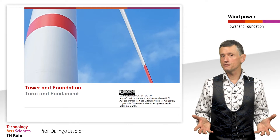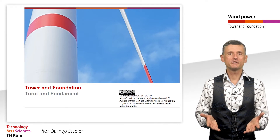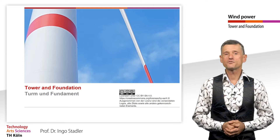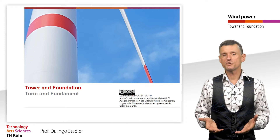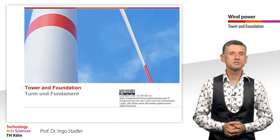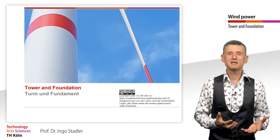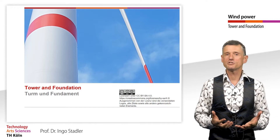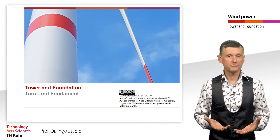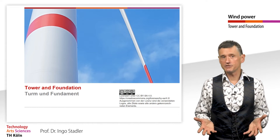because above a certain length, transport in one piece becomes difficult. What materials do we use? Steel, concrete, wood? The spectrum ranges from lattice constructions to tubular steel towers with and without cable bracing, to massive concrete structures or combinations thereof. Wood is also an alternative.